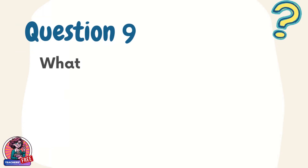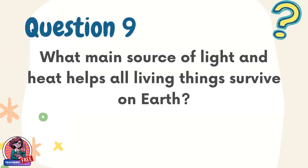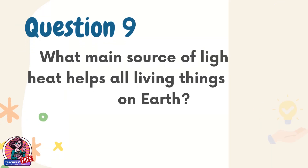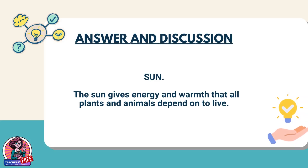Question 9. What main source of light and heat helps all living things survive on Earth? Answer: Sun. The sun gives energy and warmth that all plants and animals depend on to live.